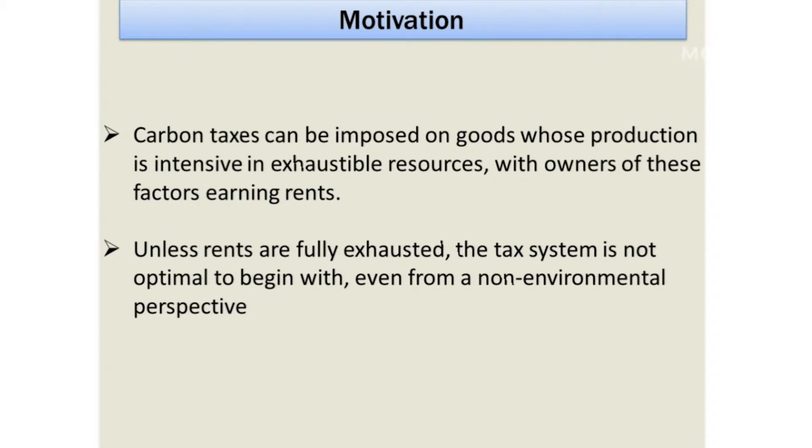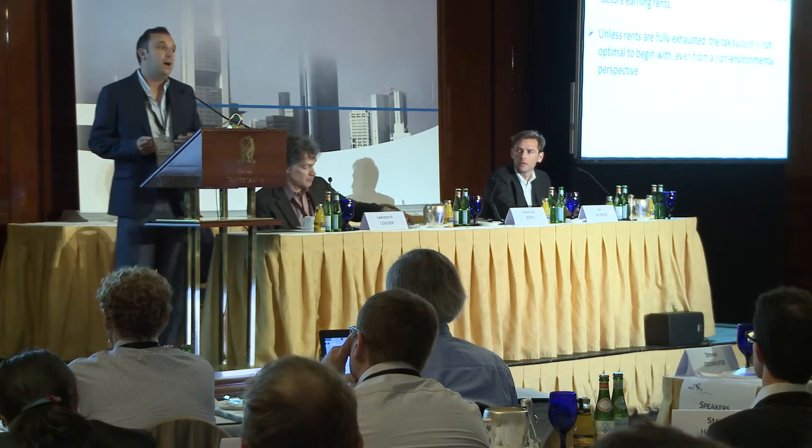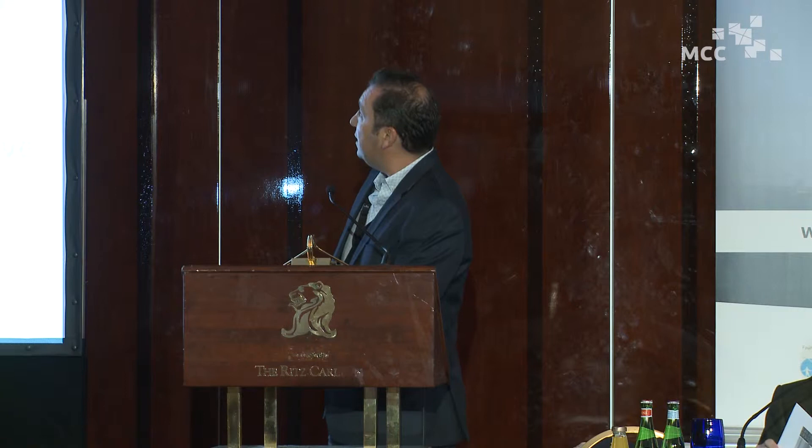What I'm going to do here is to basically remind you that there are two underlying assumptions in this earlier literature that one should look at carefully. The first one is that the production structure of these models typically ignores the possibility that some goods actually use exhaustible resources intensively, and to the extent that the tax system fails to fully tax the rents that these resources generate, there is essentially a potential for the environmental tax to serve as a surrogate for the rent tax. One of the reasons we might actually generate a double dividend is because perhaps the optimal tax system is not optimal to begin with — in other words, there is a failure to fully tax rents.